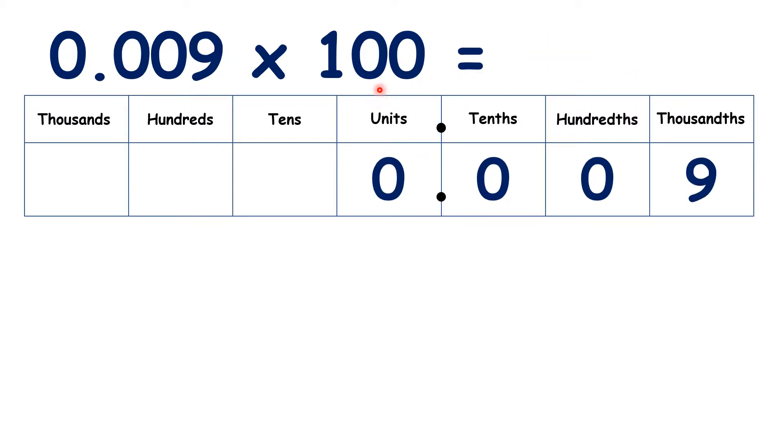So now, instead of multiplying by 10, let's try multiplying by 100. When we multiply by 100, the digits move 2 place values to the left, rather than just 1. So if we move 2 places across, you can see that the 9 that was in the thousandths is now in the tenths.